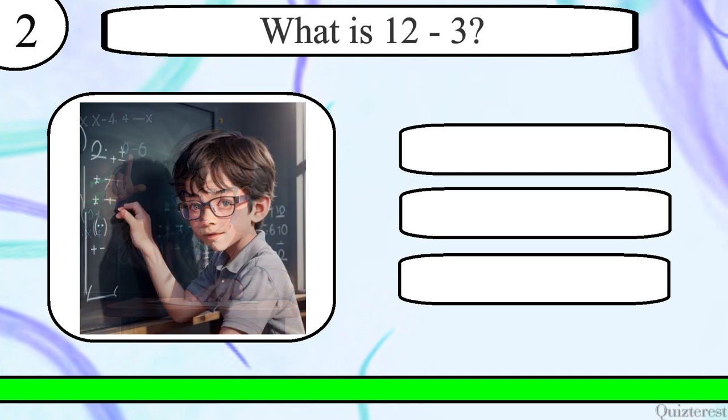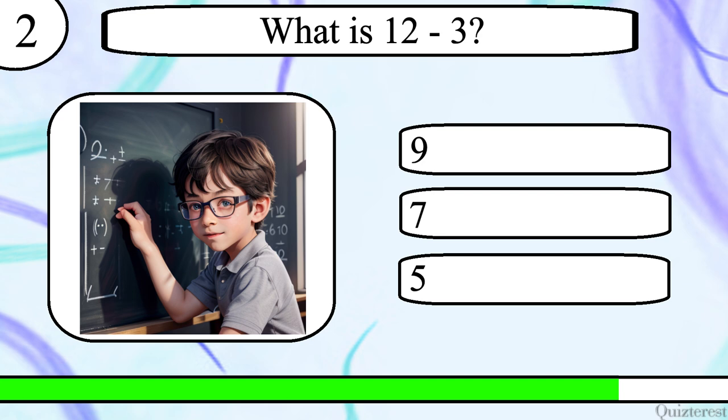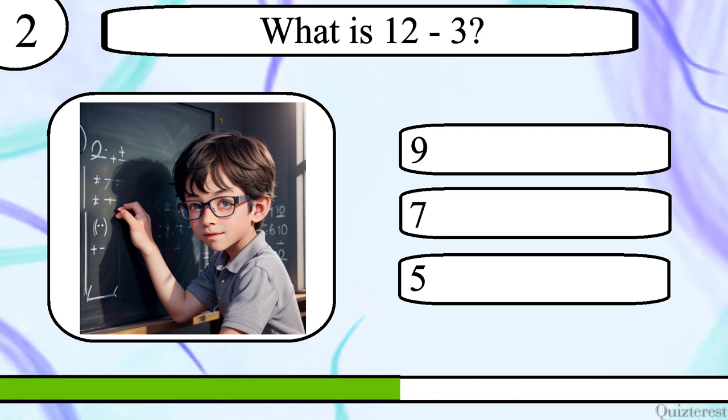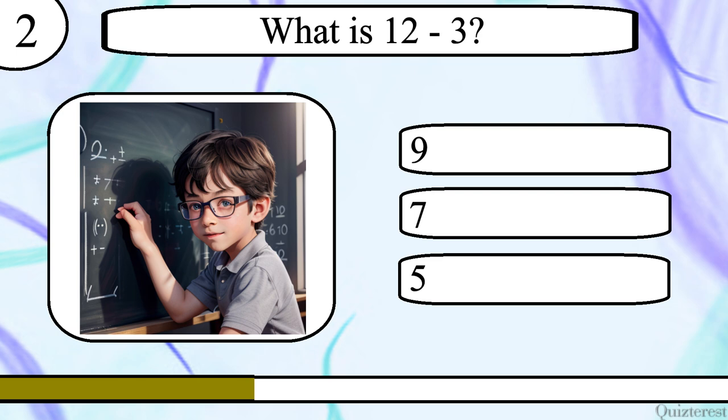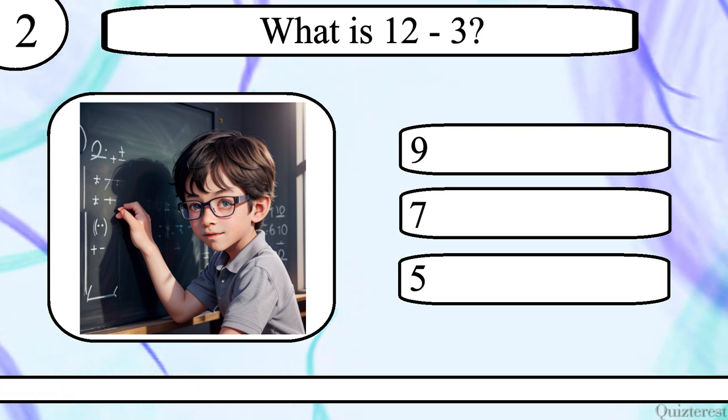Question 2. What is 12 minus 3? 9, 7 or 5? The correct answer is 9.